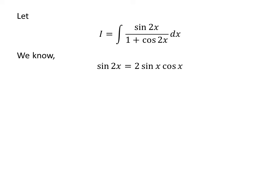We know the famous identity for any angle x: sine of 2 times x is equal to 2 times sine of x times cosine of x. The video card in the upper right corner contains the proof of this identity, and the link is also given in the description. So, I replaced sine of 2 times x in the above integrand by 2 times sine of x times cosine of x.